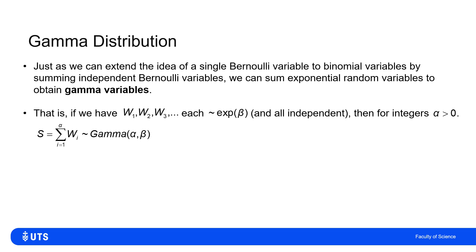But if I've got alpha as a positive integer, then if I add up alpha of those exponential rate parameter beta variables, then the distribution of the sum of those should be a gamma distribution with first parameter alpha, second parameter beta.